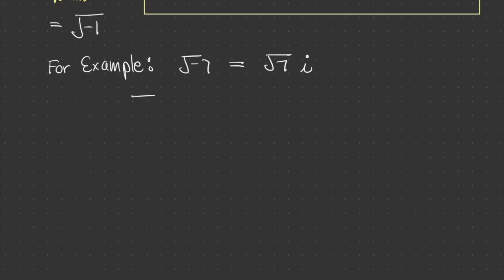And the way we get there is the square root of 7 multiplied by the square root of negative 1 is equal to the square root of 7i. And remember, the square root of negative 1 is i, which is why we write the square root of 7i.